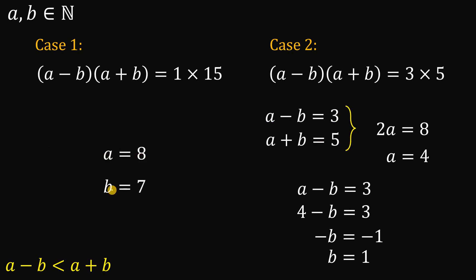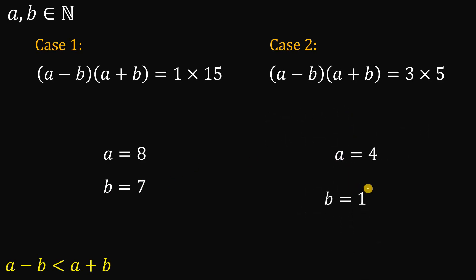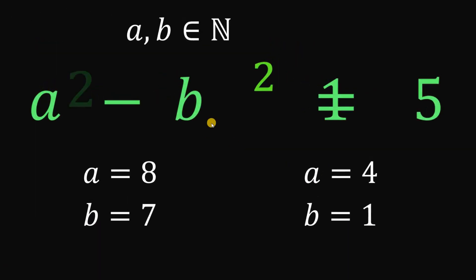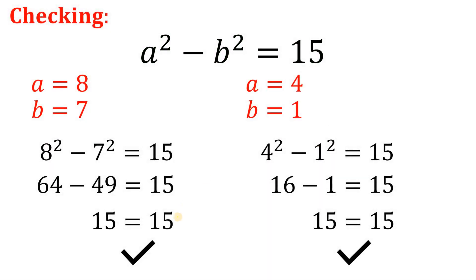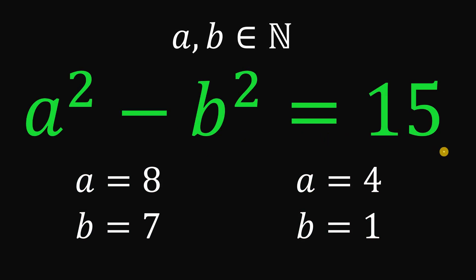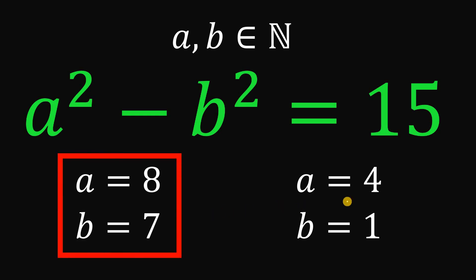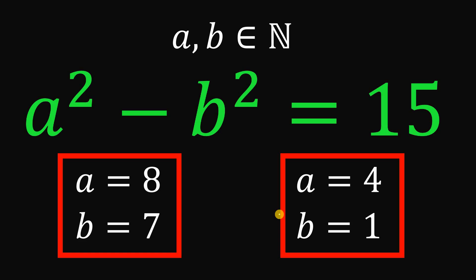Therefore, we have two cases. Case 1: a equals 8 and b equals 7. Case 2: a equals 4 and b equals 1. Given that a and b are natural numbers satisfying the equation a squared minus b squared equals 15, we found two possible pairs. Checking both: the left-hand side and right-hand side balance — both equal 15. The solutions are a equals 8, b equals 7, or a equals 4, b equals 1.